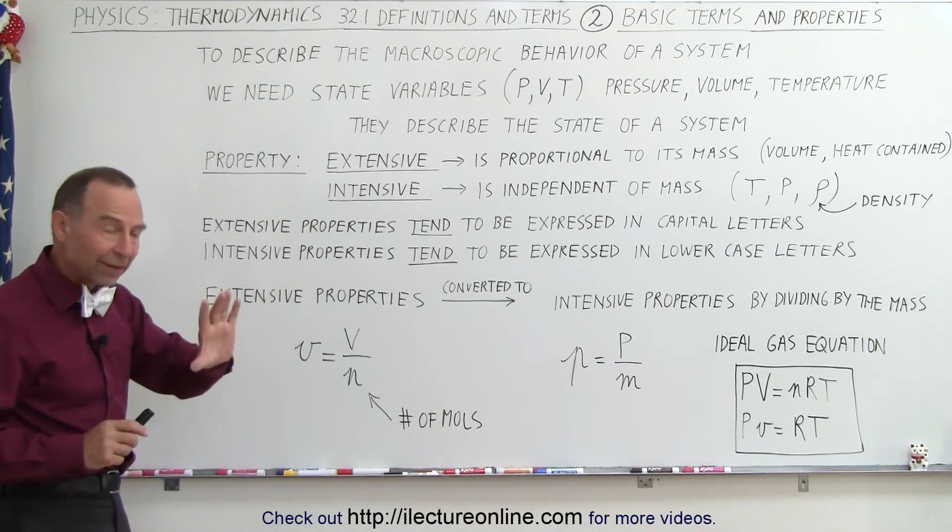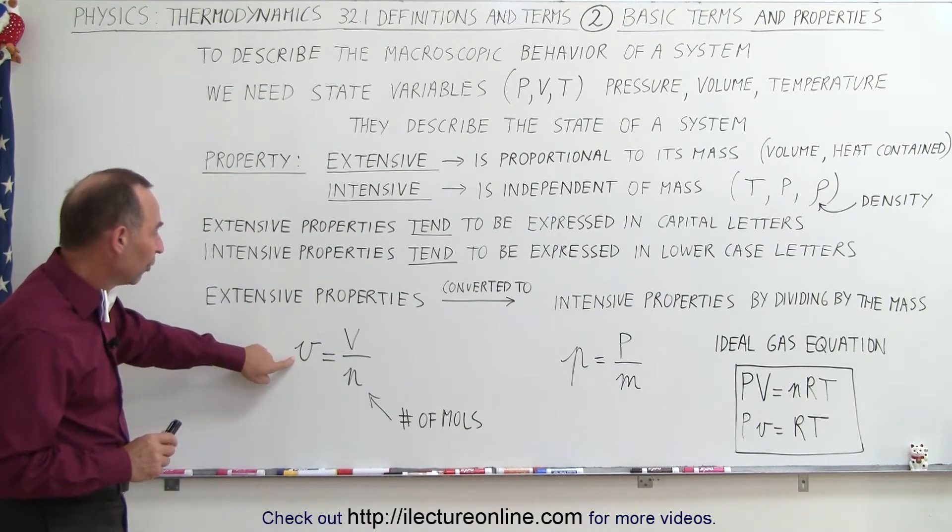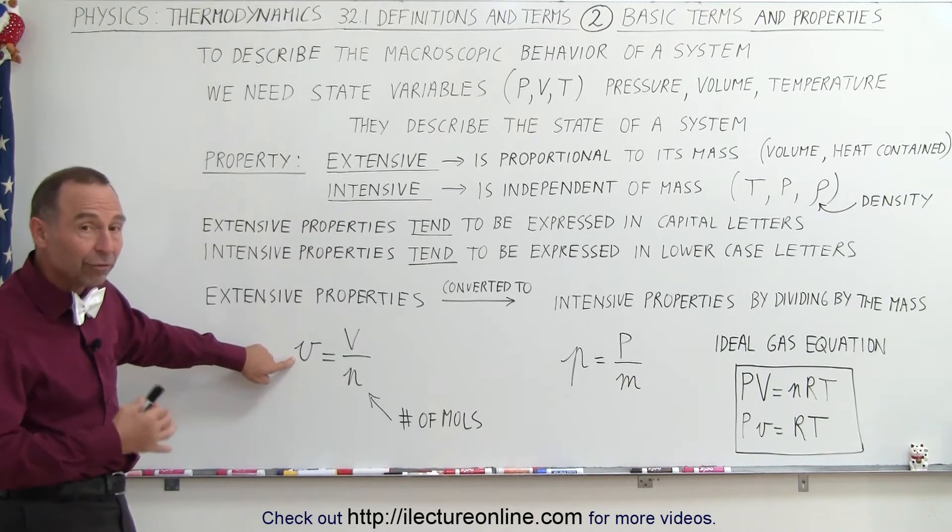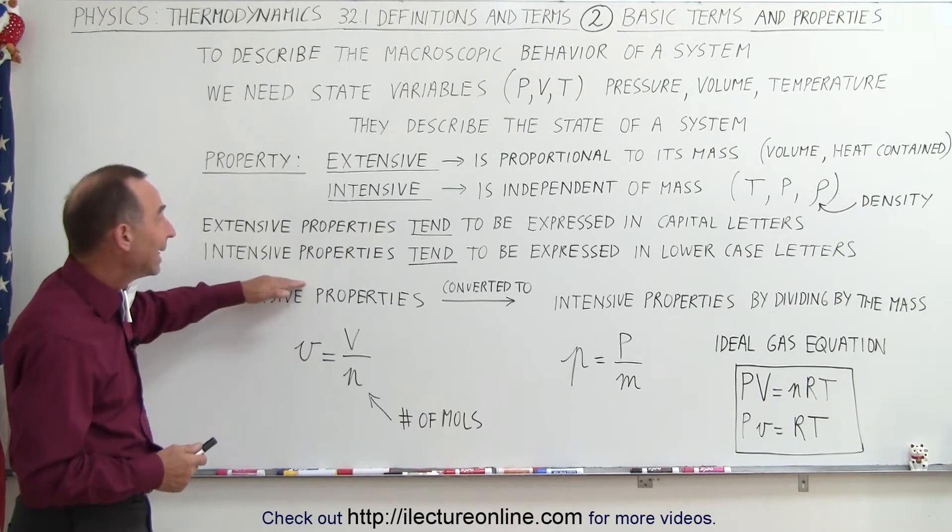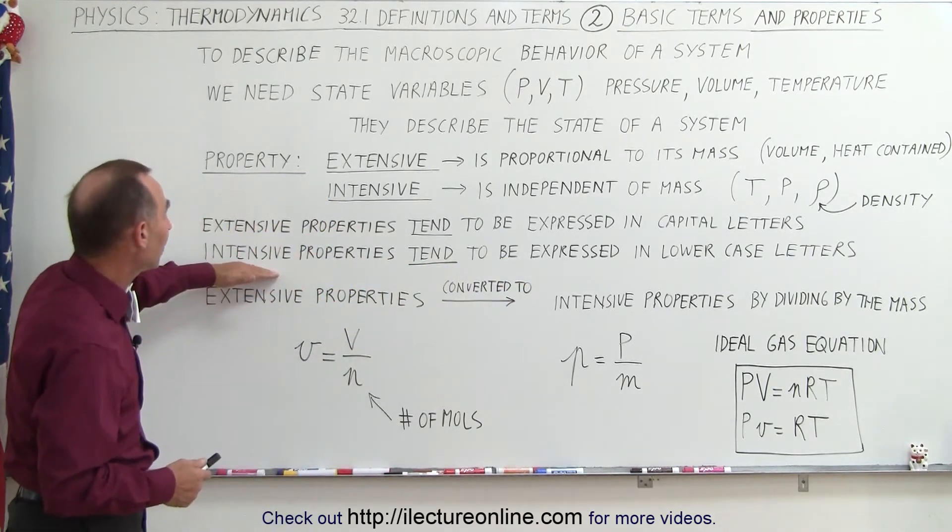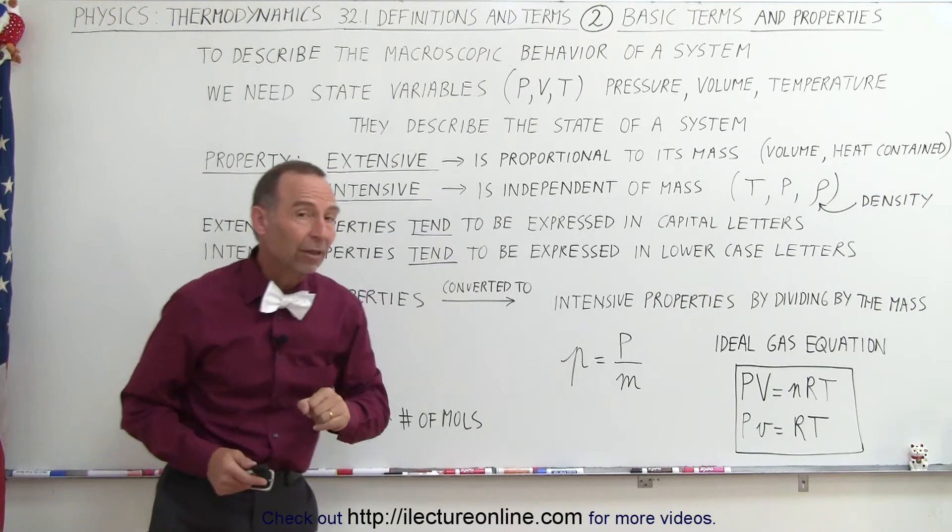Here we have an example of a small v, which represents volume, but it represents the volume that is now independent because it's an intensive property, now independent of its mass.